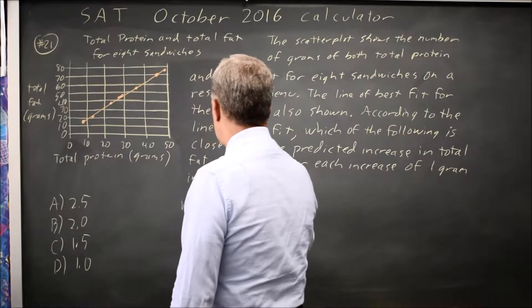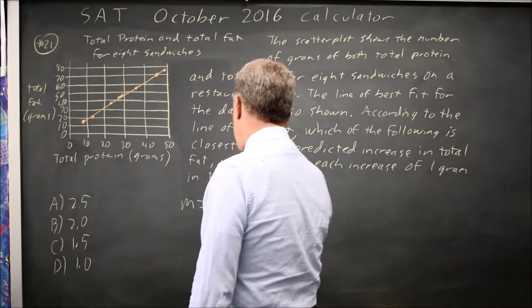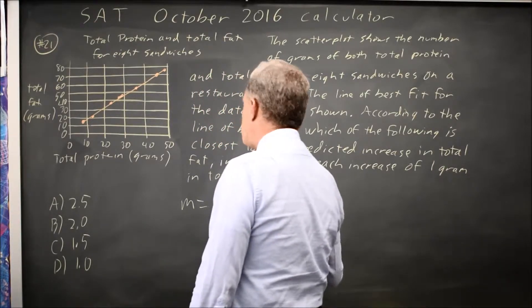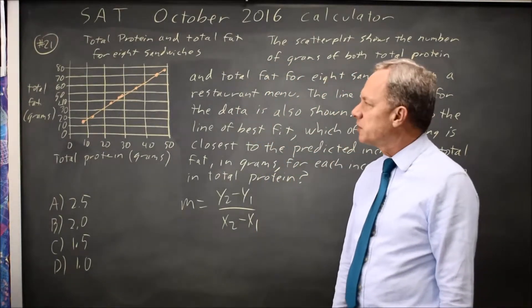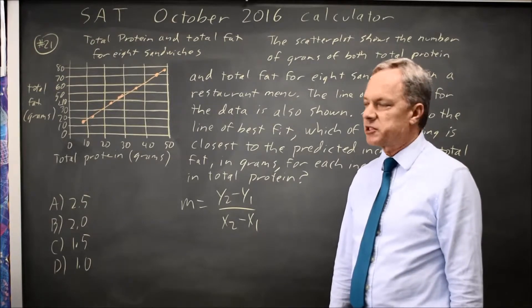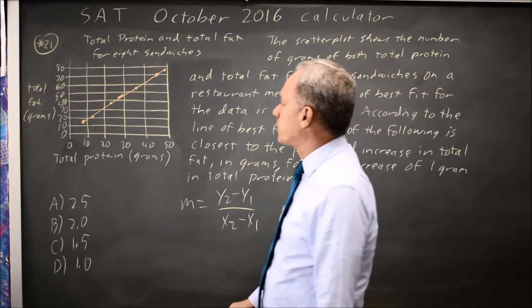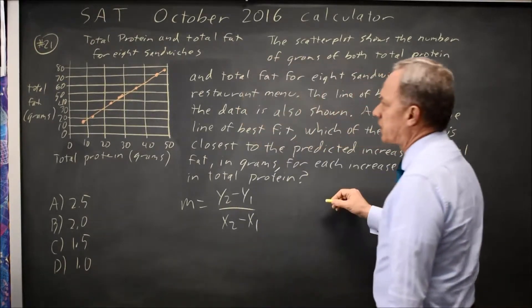Slope is Y2 minus Y1 over X2 minus X1. So let's pull a couple points off the line of best fit, which is important in general, although in this case the sandwiches are very close to the line of best fit, so it's less sensitive to that error.